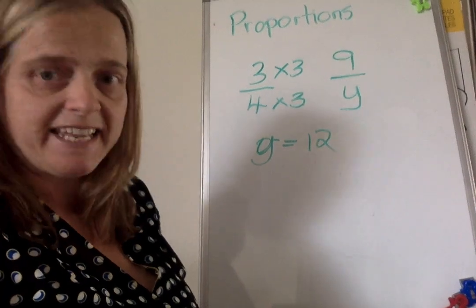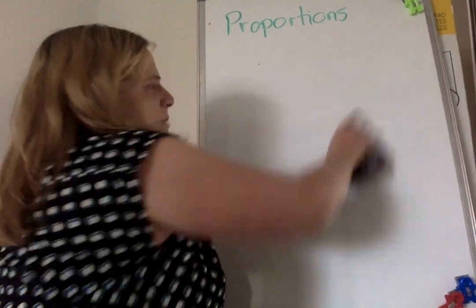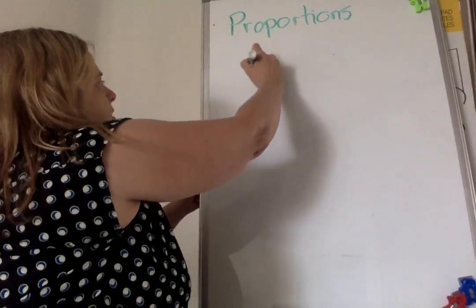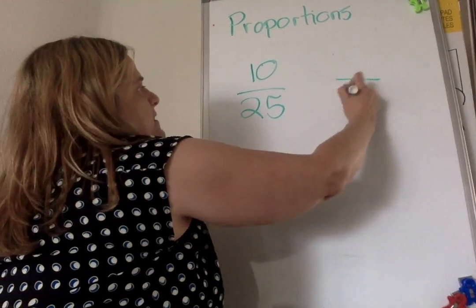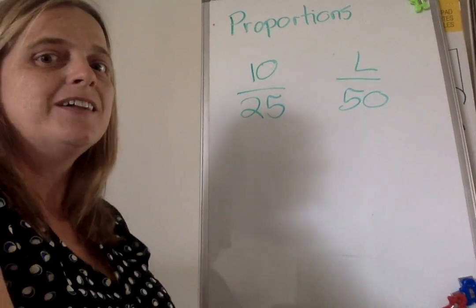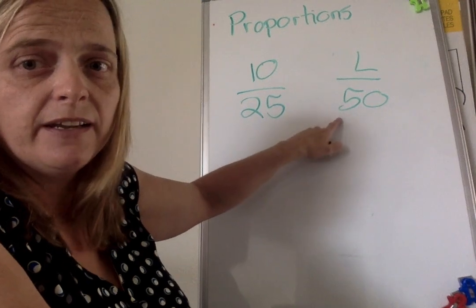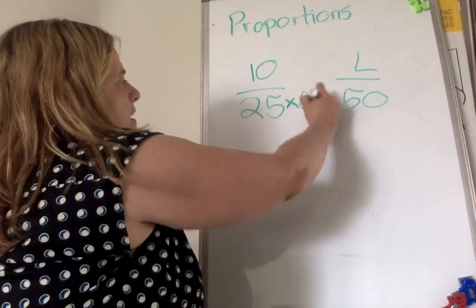I'm going to do two more. Use your paper if you're with me. Let's make this one 10 over 25 is the same as L over 50. What's L? Well, what did you do to 25 to make it become 50? You multiplied it by 2. Therefore, multiply the top by 2. Two times 10 is 20, so L is 20.